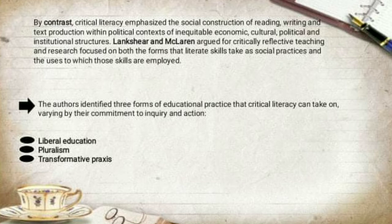By contrast, critical literacy emphasized the social construction of reading, writing, and text production within political contexts of inequitable or unfair economic, cultural, political, and institutional structures. Lankshear and McLaren argued for critically reflective teaching and research focused on both the form that literate skills take as social practices and the uses to which those skills are employed. The authors identified three forms of educational practice that critical literacy can take on, varying by their commitment to inquiry and action: the first is liberal education, the second is pluralism, and the third is transformative praxis.